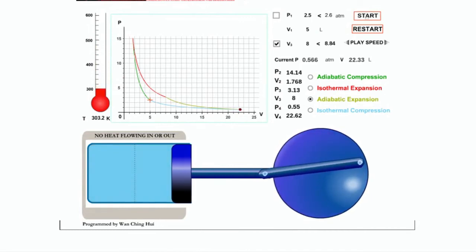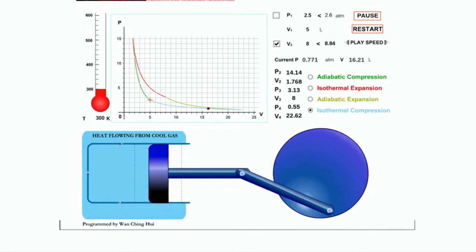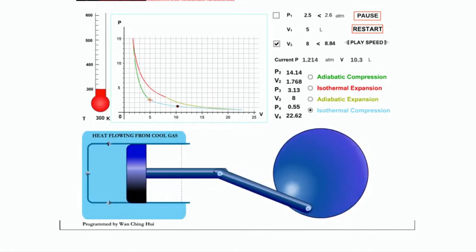And that's the maximum volume that the piston reaches. And then as it comes around the other side, we start with an isothermal compression. So notice that that compression is happening such that heat flows out of the gas.